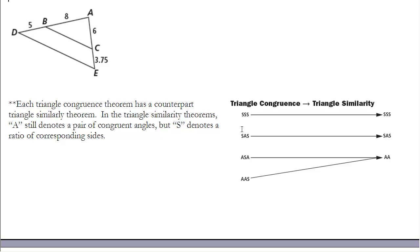We've been connecting triangle congruence and triangle similarity throughout this chapter. The four main triangle congruence theorems — SSS, SAS, ASA, and AAS — each have a counterpart similarity theorem. In similarity theorems, A still denotes congruent angles, but S denotes ratios of corresponding sides. Notably, ASA and AAS together correspond to the single Angle-Angle similarity theorem.